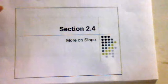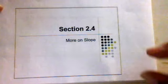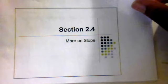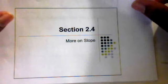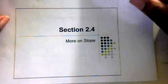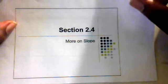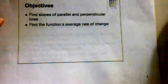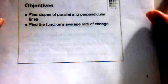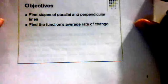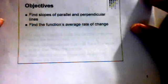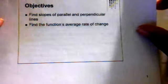In this section, we're going to be looking at more things on slope. There were some things that we talked about with linear functions and slope. Now there's more things that we're going to look at that deal with slope. In this section, we're going to be finding the slopes of parallel and perpendicular lines and also find the function's average rate of change.